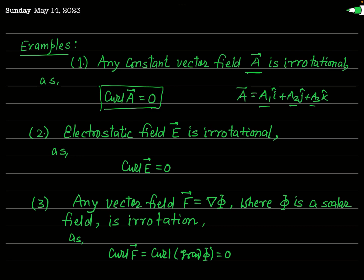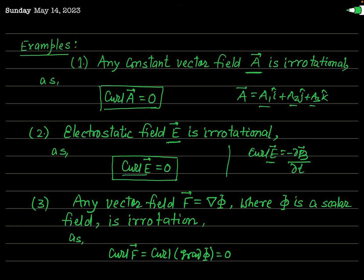Another important example is the electrostatic field E, produced by a point charge. This is definitely an irrotational vector because for an electrostatic field, curl of E is equal to 0. However, if E is of electromagnetic character, then curl of E is not 0; instead, curl of E equals minus del B by del t, which is Faraday's law of electromagnetic induction or Maxwell's equation. But if E is a purely electrostatic field, then curl of E is 0 and the field vector E is an irrotational vector.